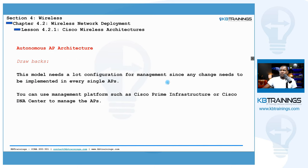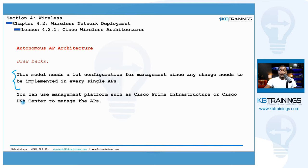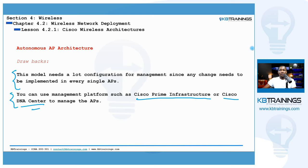Of course, we have the drawbacks. The main one is that you have to push your configuration into every single AP, which can be very hard if you have a lot of APs. However, you can use resources from Cisco — like Cisco Prime Infrastructure or Cisco DNA Center — to help manage your autonomous APs.